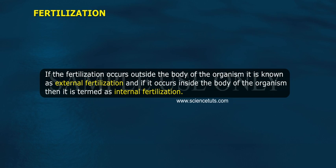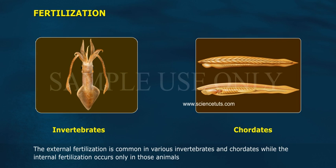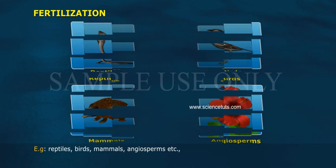External fertilization is common in various invertebrates and caudates, while internal fertilization occurs only in those animals which possess specialized sex organs for receiving and transmitting the sperms — e.g., reptiles, birds, mammals, angiosperms, etc.